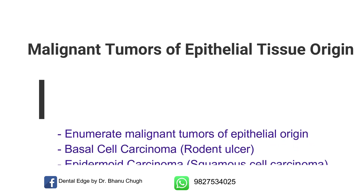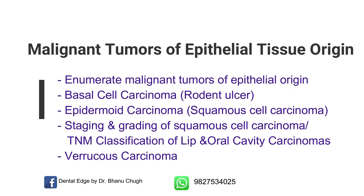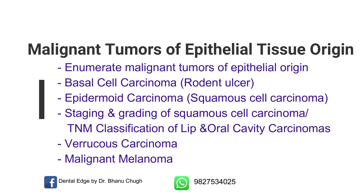Next, malignant tumors of epithelial tissue origin. In this, the important topics are: enumerate malignant tumors of epithelial origin, basal cell carcinoma or rodent ulcer, epidermoid carcinoma or squamous cell carcinoma — also referred to as oral cancer. You can be asked about oral cancer, and usually the question comes as oral cancer of the tongue. Staging and grading of squamous cell carcinoma, or TNM classification of lip and oral cavity carcinomas, verrucous carcinoma, and malignant melanoma.